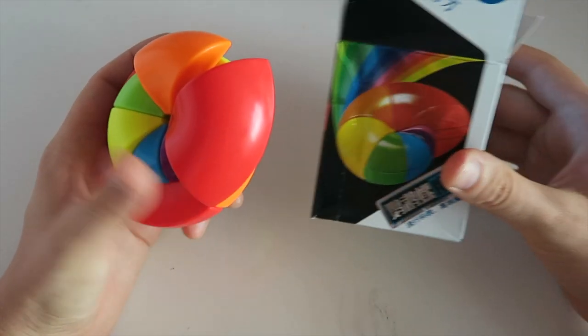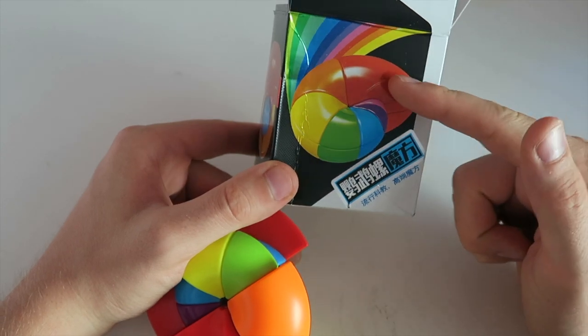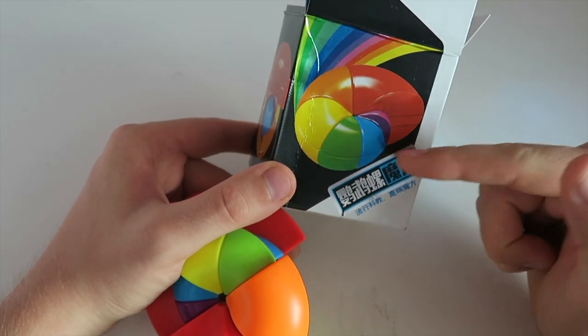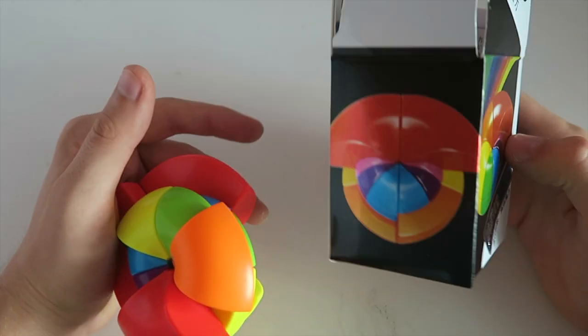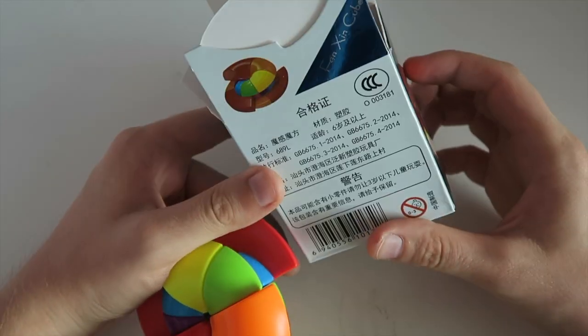And you've got to get it back into this shape, so you've got to line it up so it's red, orange, yellow, green, blue, purple, pink, and it forms this kind of Nautilus shape.